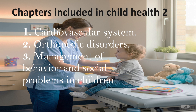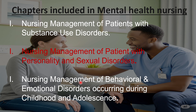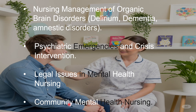When it comes to Mental Health Nursing, this is also Mental Health Nursing 2. The chapters are: nursing management of patient with substance use and disorder; nursing management of patient with personality and sexual disorders; nursing management of behavioral and emotional disorders occurring during childhood and adolescence; nursing management of organic brain disorders, which includes 3 disorders; psychiatric emergencies and crisis intervention; legal issues in mental health nursing; and community mental health nursing.